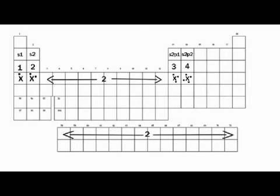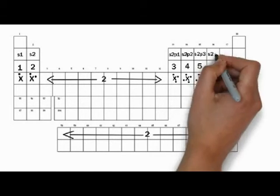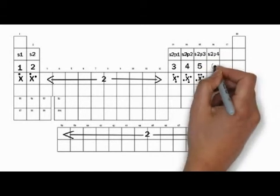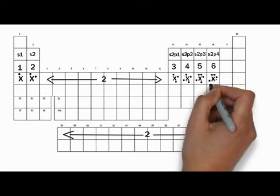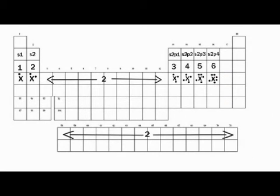Then it goes S2P2 — four electrons in the highest occupied energy level, four valence electrons, and therefore the Lewis symbol will have four dots. S2P3 gives five valence electrons and five dots on the Lewis diagram. S2P4 gives six valence electrons and six dots. S2P5 will have seven valence electrons and therefore seven dots. You should notice that there's never more than two dots on any one side of the symbol — that's how Lewis symbols are drawn.